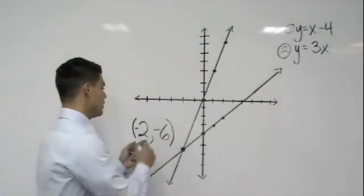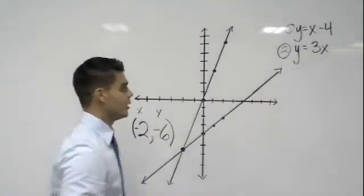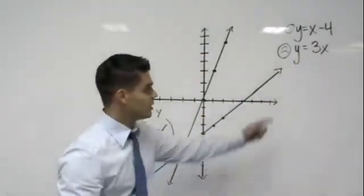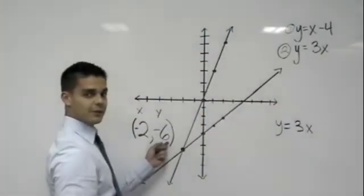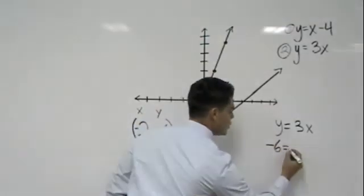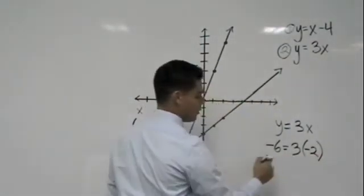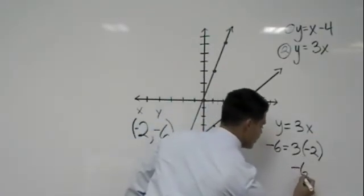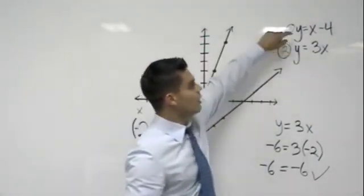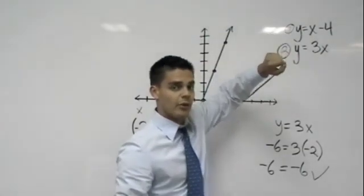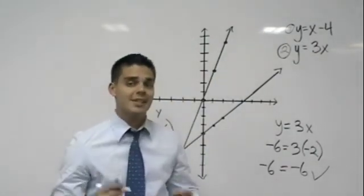If you wanted to check this problem, we can plug in negative 2 for x and negative 6 for y, since those are our coordinates. You could plug them in and see that it actually does work out. Let me show you. Number 2 says y equals 3x. We said that y is negative 6, so I put negative 6 equals 3 times x, which is negative 2. Three times negative 2 gives you negative 6, and on the left we have negative 6, so perfect—it checks out. If you take some time to do this on the first equation, you'll see that it also works out. Our solution must always work for both of our equations, making that solution for the systems of equations.